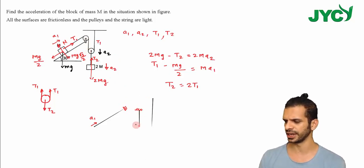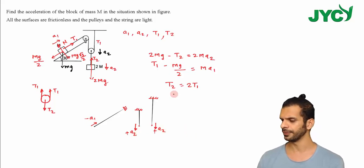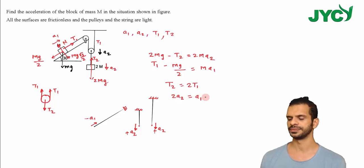This end is going down with A2 because the pulley is going down with A2, and this end is also going down with A2. This end is fixed, so this end is also fixed. I'll put minus sign here, plus sign, plus sign. So the equation is minus A1 plus 2A2 equals 0, which gives 2A2 equals A1.